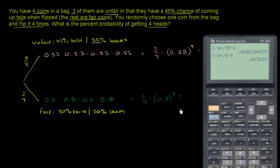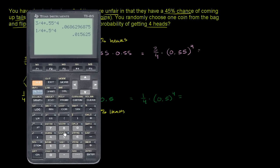Now the probability of getting four heads in a row either way is going to be the sum of these two values. So it's going to be 0.015625 plus 0.068629 — I'm going to round it anyway, so it won't matter too much.